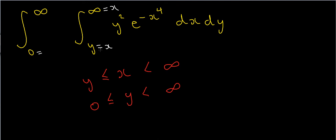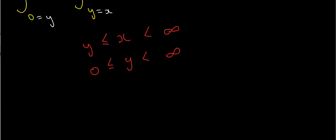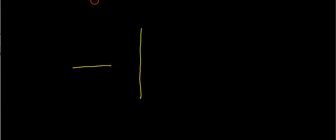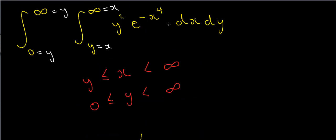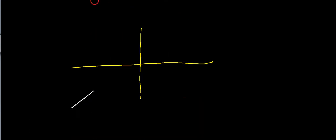The same applies for y. I've got to go from y equals 0 to y equals infinity. So if I physically draw this region of integration, I've got to draw the line y equals x — that's just the diagonal line right through the origin. So that's the line y equals x.